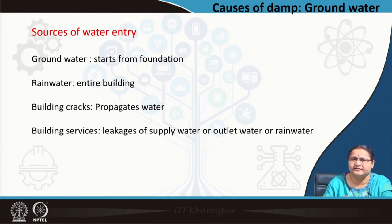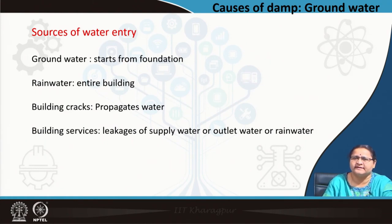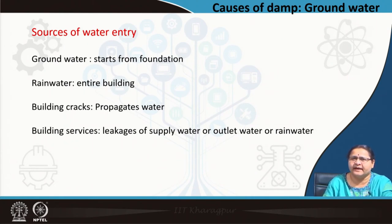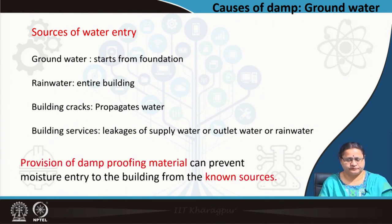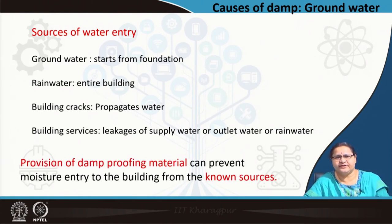The last, but not at all the least, which we ignore and overlook, is building services. Leakages in pipes — inlet pipe, outlet pipe, rain water pipe, any kind of lines — leakages in those lead to damp. Provision of damp proofing material can prevent moisture entry to the building from these known sources. Our objective is to tap those points from where we can minimize the chances of damp being propagated inside the building and take measures for controlling that.